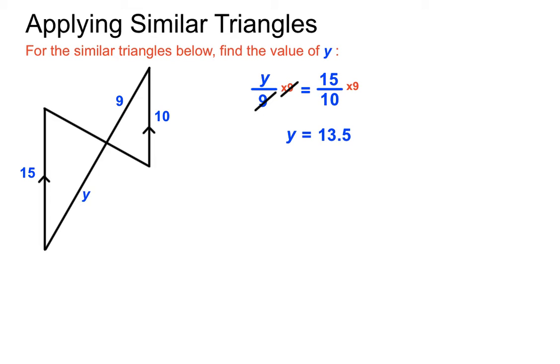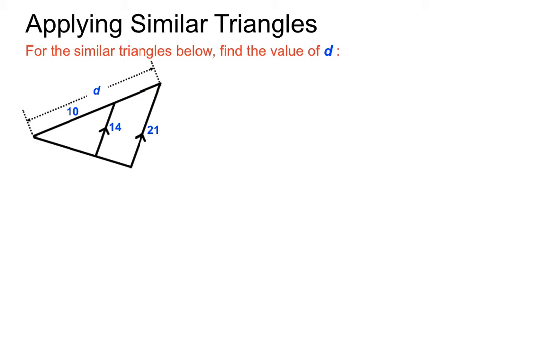So once again, we've used the idea that in similar triangles, matching sides are in the same ratio as each other. Okay, here's a very strange sort of setup. It's what I call overlapping triangles here. You've actually got two triangles there, but one of them is kind of hidden. You've got a smaller triangle and a larger triangle there.